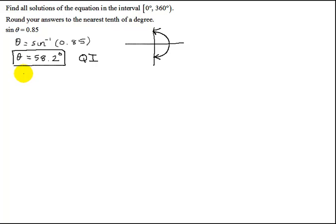But now we need to find if there are any other quadrants in which the sine of theta could equal 0.85. So remember our mnemonic: all students take calculus. All trig functions are positive in quadrant one. Where is the sine of theta also positive? It's also positive in quadrant two. So somehow I have to come up with a quadrant two angle whose sine is 0.85.